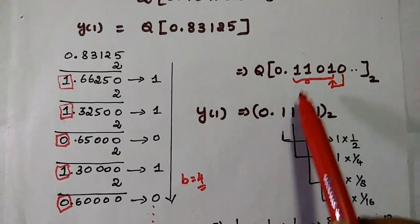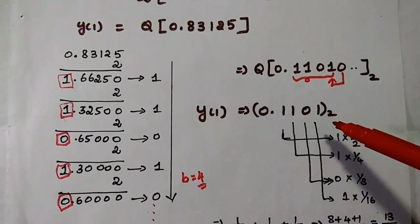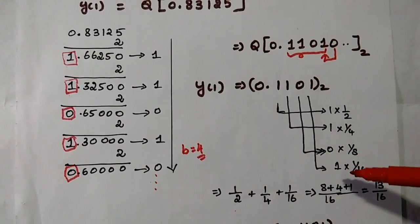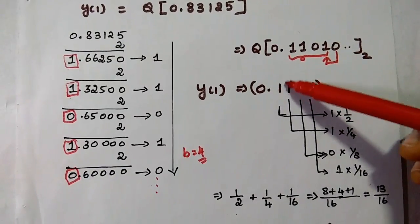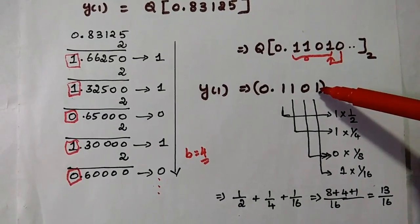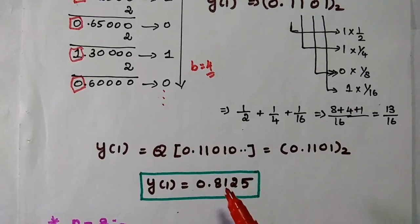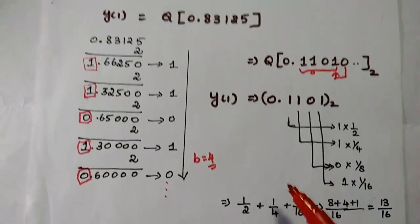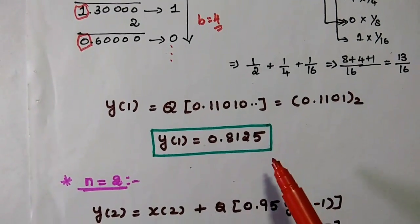So y(1) is equal to 0.1101 in binary — this is the rounded, quantized value. To convert back to decimal, after the binary point the bits are multiplied by 1/2, 1/4, 1/8, and 1/16 respectively. We get 13/16, which is 0.8125. The actual value was 0.83125, but after rounding off we obtained 0.8125. This is the y(1) value.